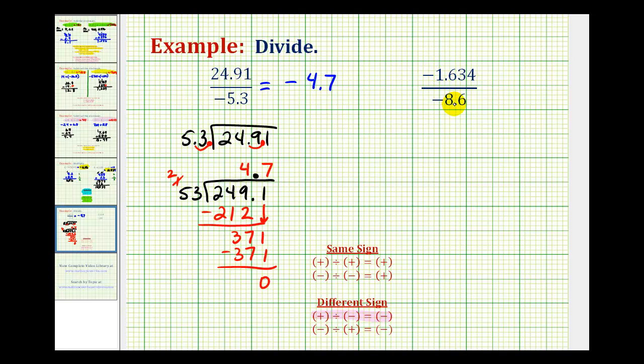Notice here we have a negative divided by a negative, which is positive. So let's go ahead and make a note of that as well. It's going to be positive. Now we can ignore the signs and divide as we normally would. So we'll have 1.634 divided by 8.6. Again, we want our divisor to be a whole number, so we'll have to move the decimal point to the right once here and the same here.